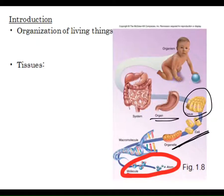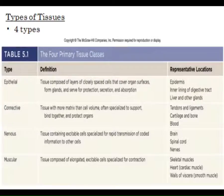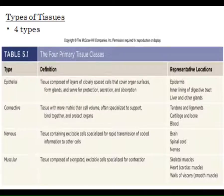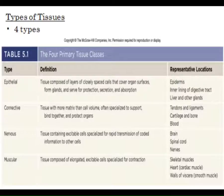From lecture you know there are four different types of tissues. Let's go through each and figure out where each is found in the body and some general characteristics. We're going to be focusing on only two of them today: epithelial and connective.